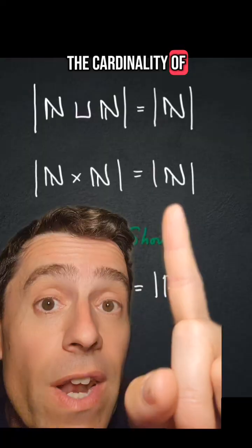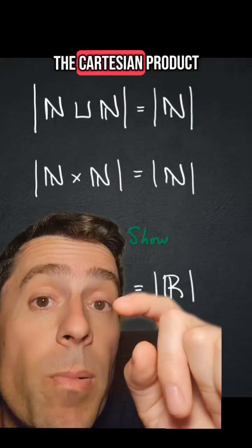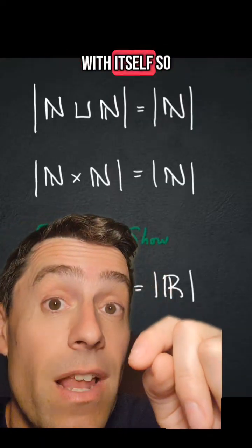Next, prove that the cardinality of the natural numbers is equal to the cardinality of the Cartesian product of the natural numbers with itself.